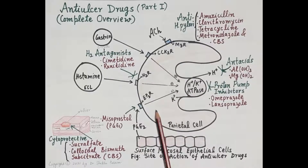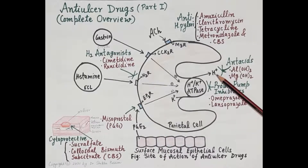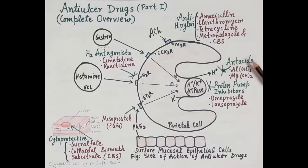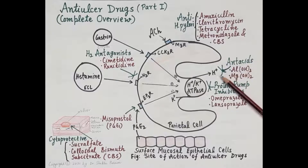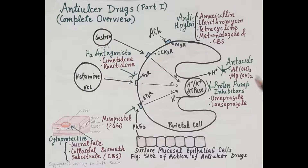Gastric acidity — the acid released by stimulation of the proton pump — is neutralized by antacids. Antacids are a type of anti-ulcer drug that neutralize gastric acid. Examples include aluminum hydroxide and magnesium hydroxide.